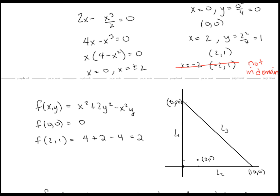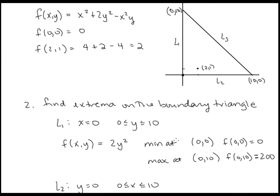Now we find the extreme values along the boundary, which consists of three line segments. For L1, the segment along x = 0 with y from 0 to 10: the function reduces to 2y². The minimum is at y = 0 with value 0, and the maximum is at y = 10 with value 200.